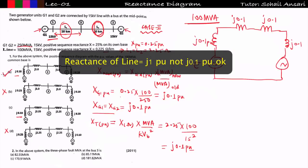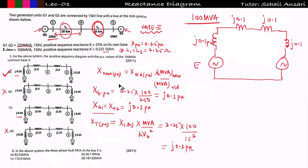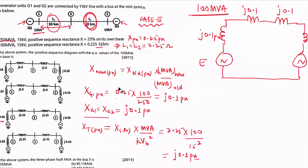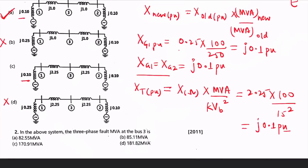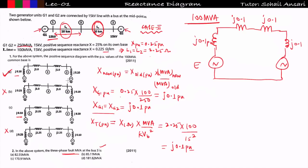So option A is correct for Part 1. For Part 2, the question asks about three-phase fault MVA at bus 3, which involves symmetrical fault analysis — I haven't covered that yet, so let's skip that part and I'll explain it later when we get to symmetrical faults.